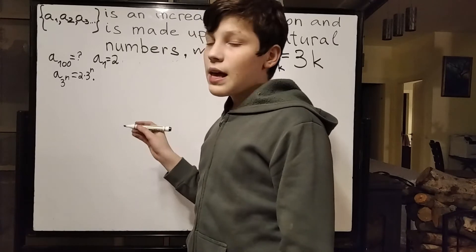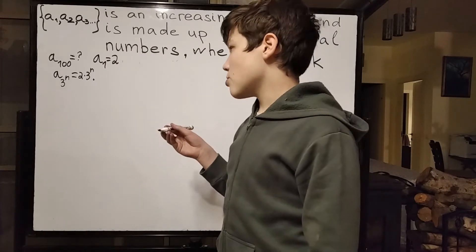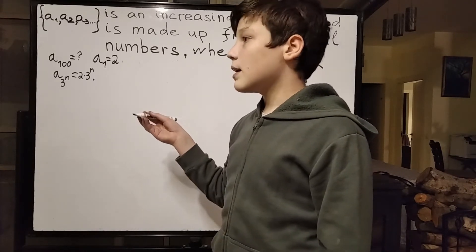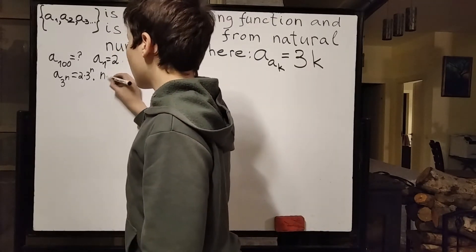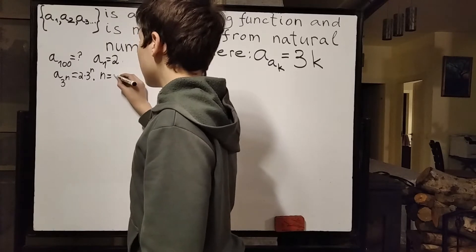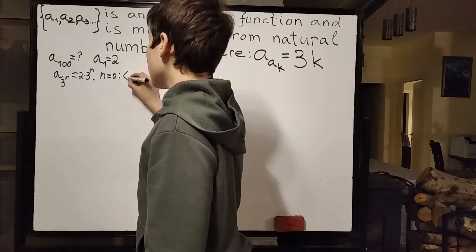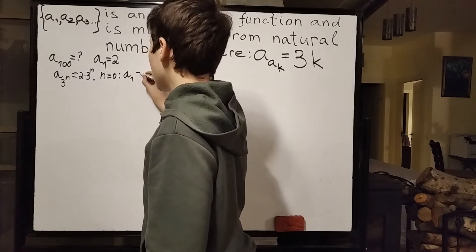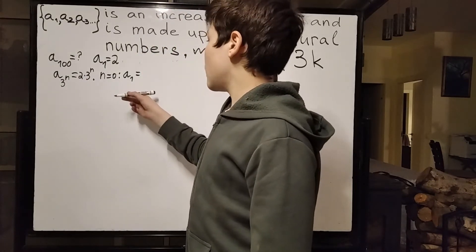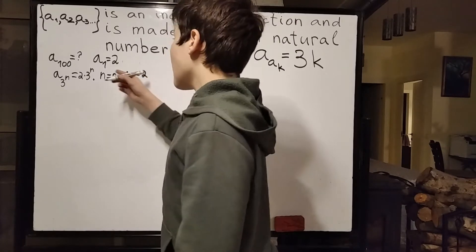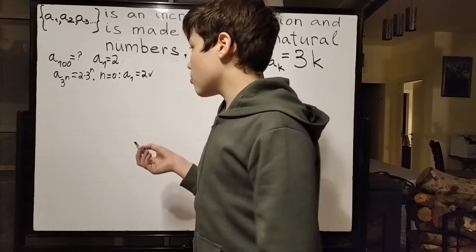Base case: n is equal to 0. 3 to the 0 is 1, so we get a1, which should equal exactly 2 times 3 to the 0, which is 2. And we established that that is true, so our base case holds and we can move on.